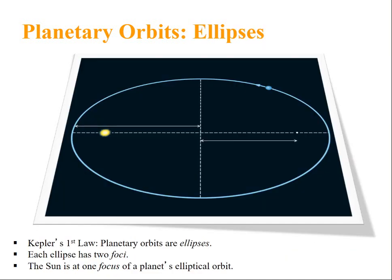Now let us discuss about ellipse. Kepler's first law states that planetary orbits are ellipses. Each ellipse has two foci. The sun is at one of the focus of a planet's elliptical orbit.